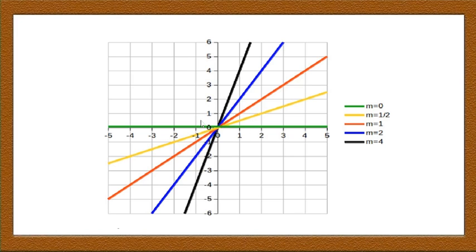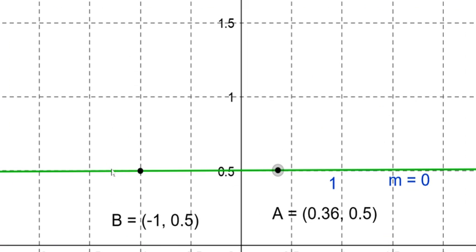You should know the meaning of the angle of inclination of a line. Looking at different lines: the green line has an angle of inclination of 0° and its slope is 0. The angle made by the yellow line is less than that of the red line, so the slope of the yellow line is less than the slope of the red line. The slope of the yellow line is 1/2 whereas the slope of the red line is 1.